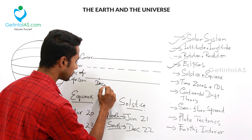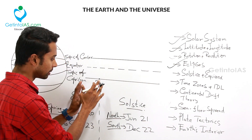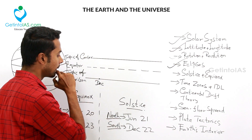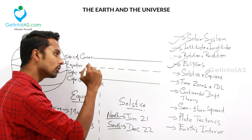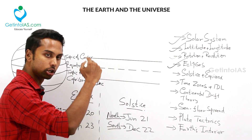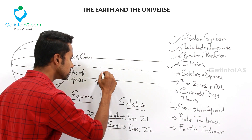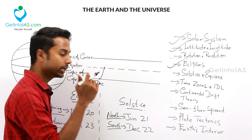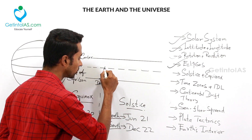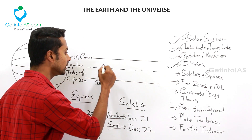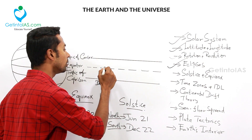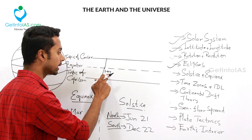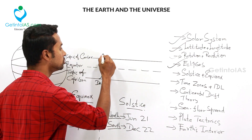Starting in December with southern solstice, the sun's rays slowly move from the Tropic of Capricorn to the equator — so equinox happens in March. From the equator, sun's rays gradually go to the Tropic of Cancer, which is northern solstice — so April, May, it reaches June. Then sun's rays gradually come back from the Tropic of Cancer to the equator — the second equinox happens in September.